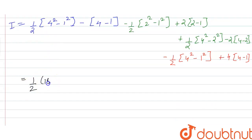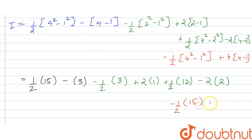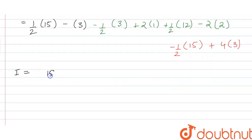So we have (1/2)(16 minus 1) = 15/2, minus (4 minus 1) = 3, minus (1/2)(3) = 3/2, plus 2 into 1 = 2, plus (1/2)(12) = 6, minus 2 times 2 = 4, minus (1/2)(15) = 15/2, plus 4 times 3 = 12.